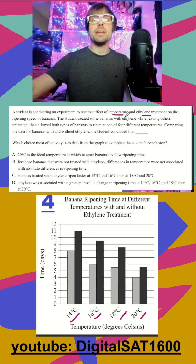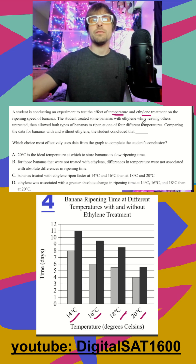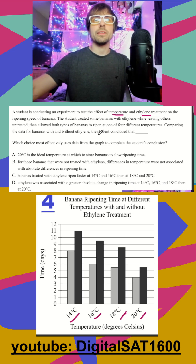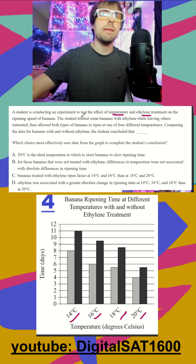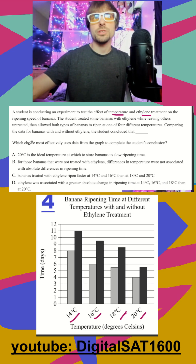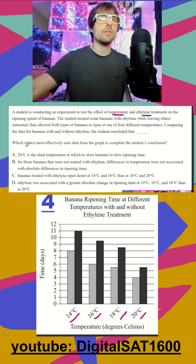They treated some bananas with ethylene, leaving others untreated, then allowed both to ripen at four different temperatures. Comparing the data with and without, the student concluded that... Let's just see which one's correct according to the graph.